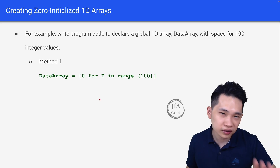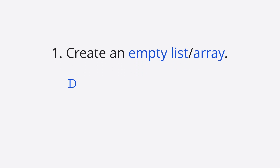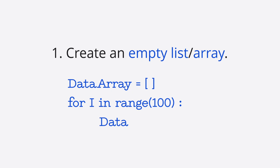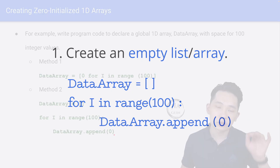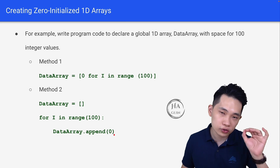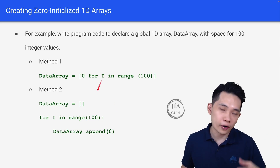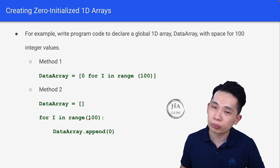If you find Method 1 a bit complicated to remember, you can use Method 2. First, create an empty list: data_array = []. Then, for i in range(100), data_array.append(0). This appends 100 zeros into the list or array. You can use Method 1 or Method 2 depending on which one you prefer.